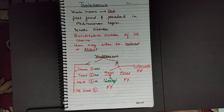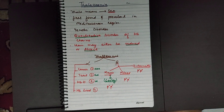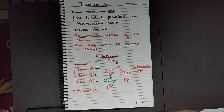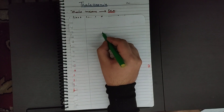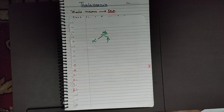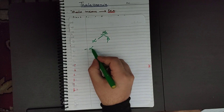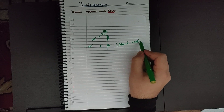Thalassemia is a genetic disorder and it is a quantitative disorder. In a previous video we discussed that sickle cell anemia was a type of qualitative disorder, and thalassemia is a quantitative disorder of hemoglobin. Hemoglobin is made of two chains — alpha chains and beta chains. A quantitative defect means either alpha chains or beta chains are going to be absent or reduced.